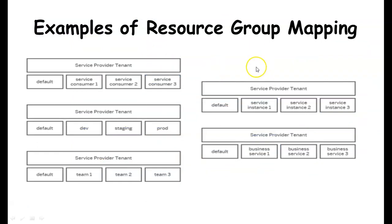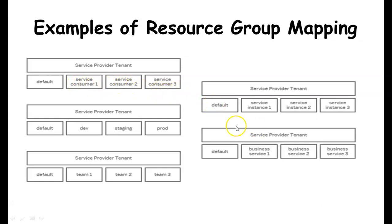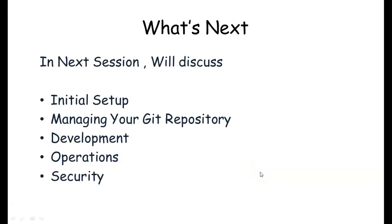Looking at examples of resource group mapping: each service provider tenant will have a key default, followed by service consumer one, service consumer two, and so on.